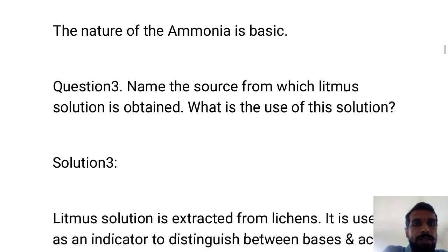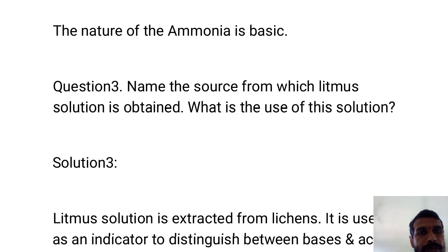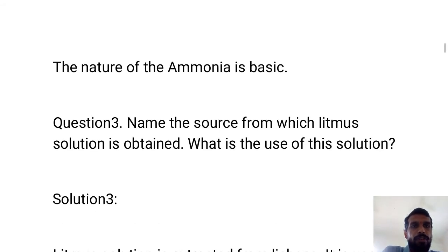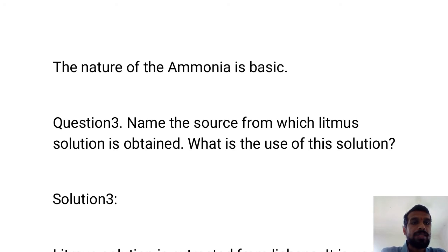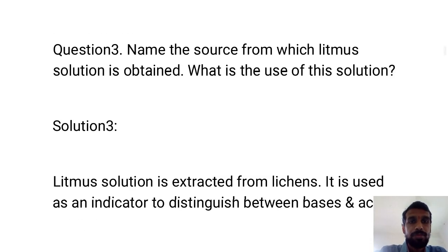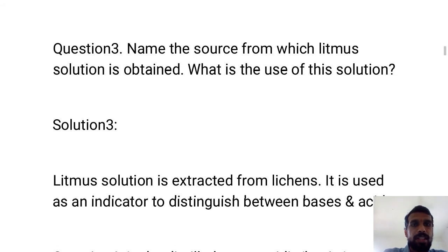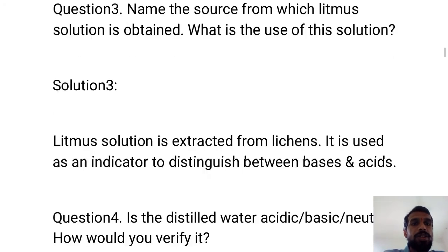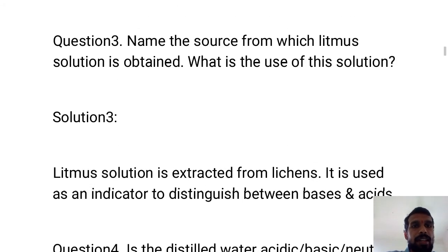Question 3: Name the source from which litmus solution is obtained and what is the use of this solution? Litmus is a natural indicator and it is obtained from lichens. Litmus solution is extracted from lichens. It is used as an indicator to distinguish between acids and bases.